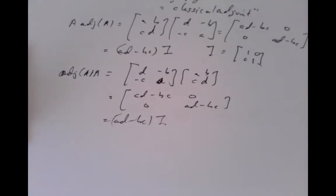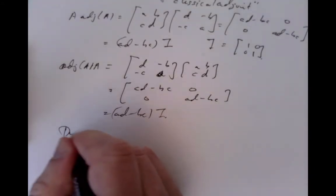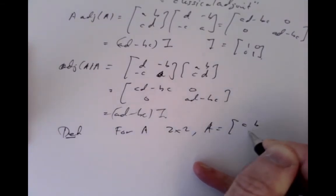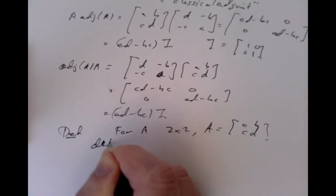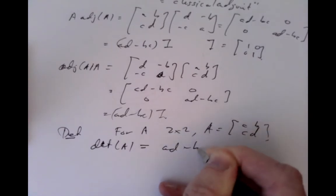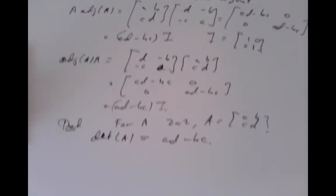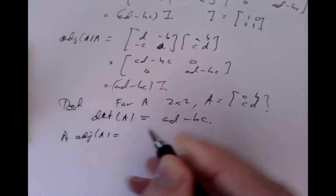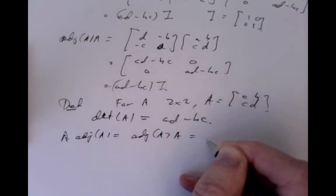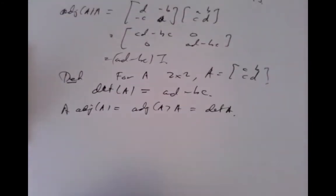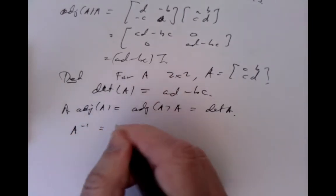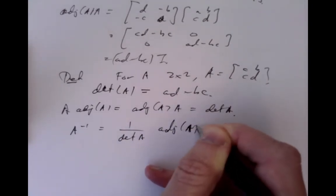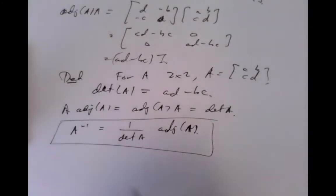We define the determinant of the 2×2 matrix A = [a, b; c, d] to be ad - bc. From the computation above, A times the adjugate equals the adjugate times A equals det(A) times the identity. Therefore the formula for the inverse is: A inverse equals 1 over det(A) times the adjugate of A. This gives us a complete picture for 2×2 matrices.